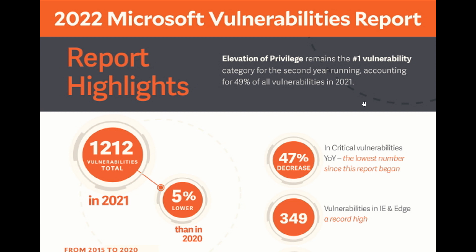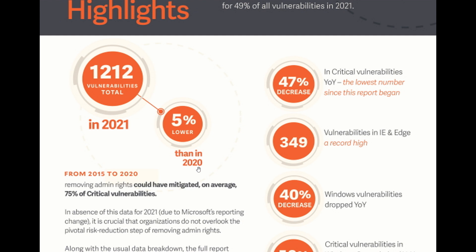Taking a more in-depth look at the report — in no particular order — there were 1,212 vulnerabilities in Microsoft products in 2021 in total, which was 5% lower than in 2020. From 2015 to 2020, removing admin rights could have mitigated on average 75% of critical vulnerabilities, meaning over three-quarters of critical vulnerabilities could have been avoided.